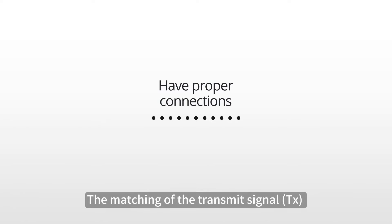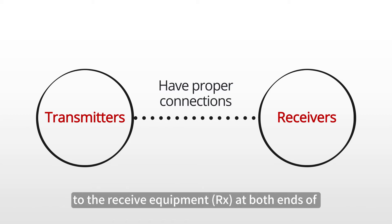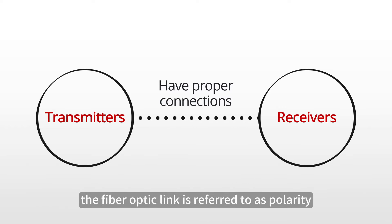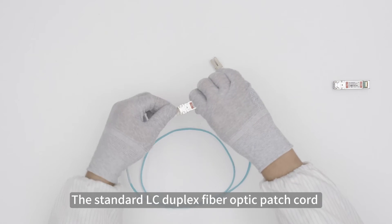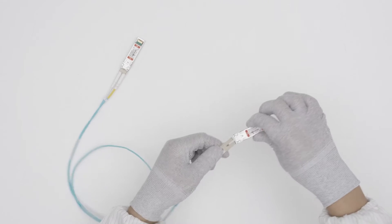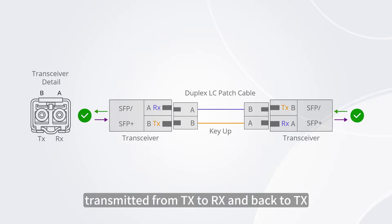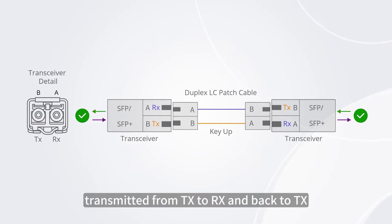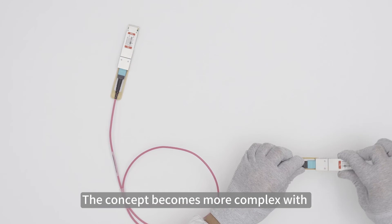What is polarity? The matching of the transmit signal to the receive equipment at both ends of the fiber optic link is referred to as polarity. The standard LC duplex fiber optic patch cord has one TX and one RX. This design ensures that the signal can be transmitted from TX to RX and back to TX.